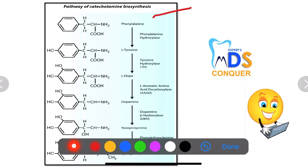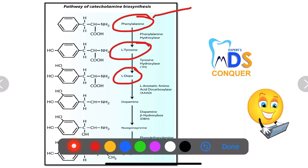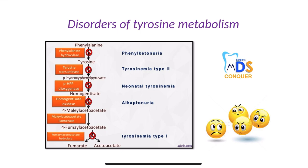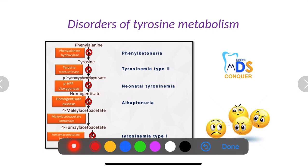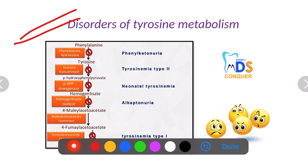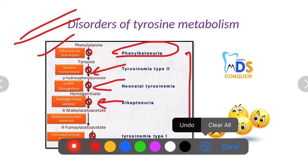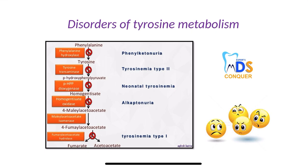These are the various catecholamine biosynthesis steps: phenylalanine is converted to tyrosine, then to L-Dopa, to dopamine, to norepinephrine, and to epinephrine. The series of reactions and enzymes involved are quite important. Disorders of tyrosine metabolism are a very important area — the applied aspect involves knowing which enzyme is blocked. In phenylketonuria, phenylalanine hydroxylase is blocked. All these diseases, their respective enzymes and reactions, are important. Alkaptonuria is also quite important — give it a good glance.